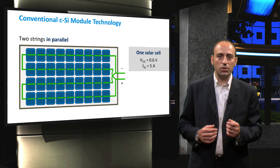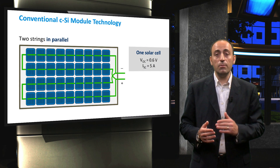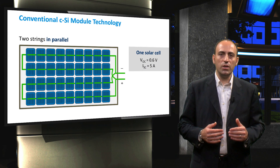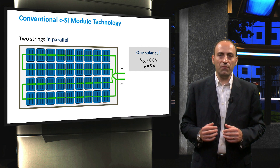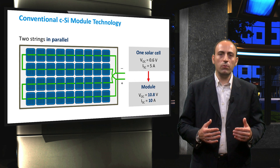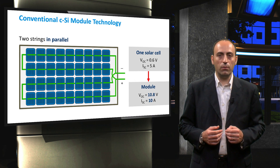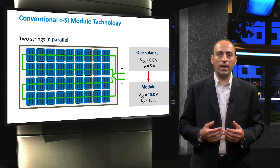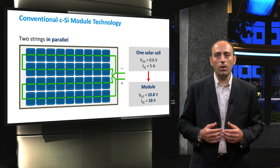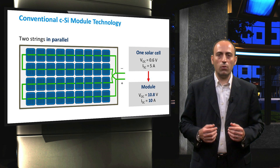The switch inside the junction box can also connect several series-connected strings in parallel. If two strings of 18 series-connected cells are connected in parallel, as illustrated in the figure, then the module would have an output open circuit voltage of 10.8V, which is the voltage of one string, and a short circuit current of 10A. Which exact interconnection is preferable depends on the application — this module, for example, would not be suitable for a 12V battery.